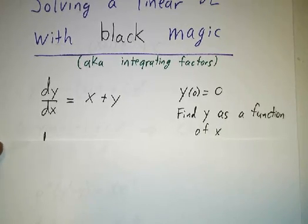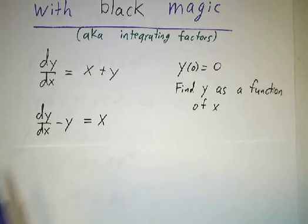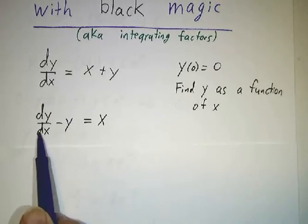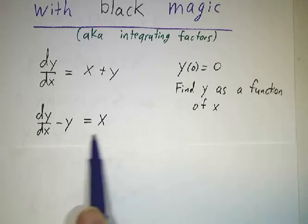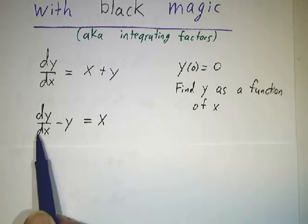Now we've drawn up the direction field and we can see more or less what this looks like, but let's get an actual answer. So if we subtract y from both sides, we've put it in the standard form of a linear equation,